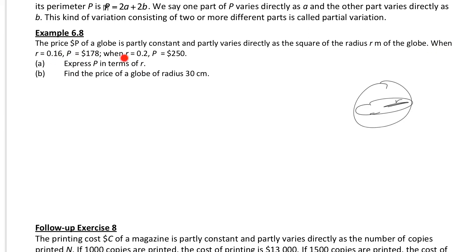We are given two sets of information. We may let P — because P has two parts — the first part is a constant, so I use a to represent it, plus b·r squared. Because the second part varies directly as the square of the radius, so it is the square of the radius. Where a and b are non-zero constants.